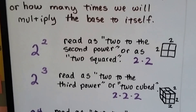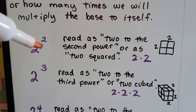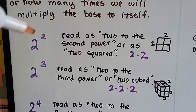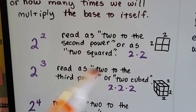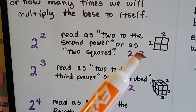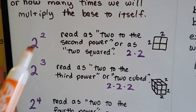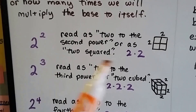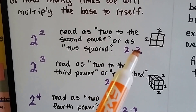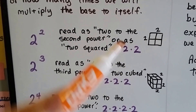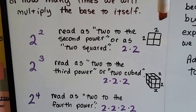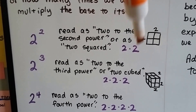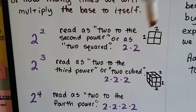If you see a 2 with a little 2 exponent, it's read as 2 to the second power, or 2 squared — 2 times 2. That's how many times we multiply 2 to itself. Think of it as a square: there's 2 going this way and 2 going this way. It's 2 times 2.